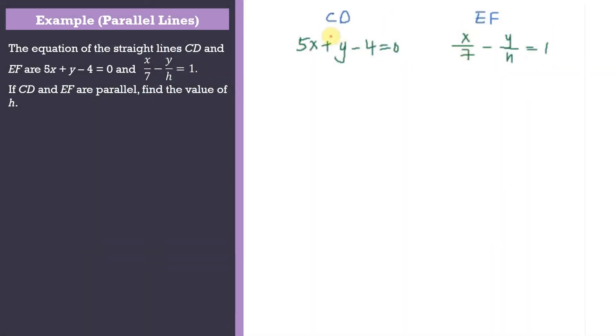The equation of the straight lines CD and EF are 5x + y - 4 = 0 and x/7 - y/h = 1. If CD and EF are parallel, find the value of h.